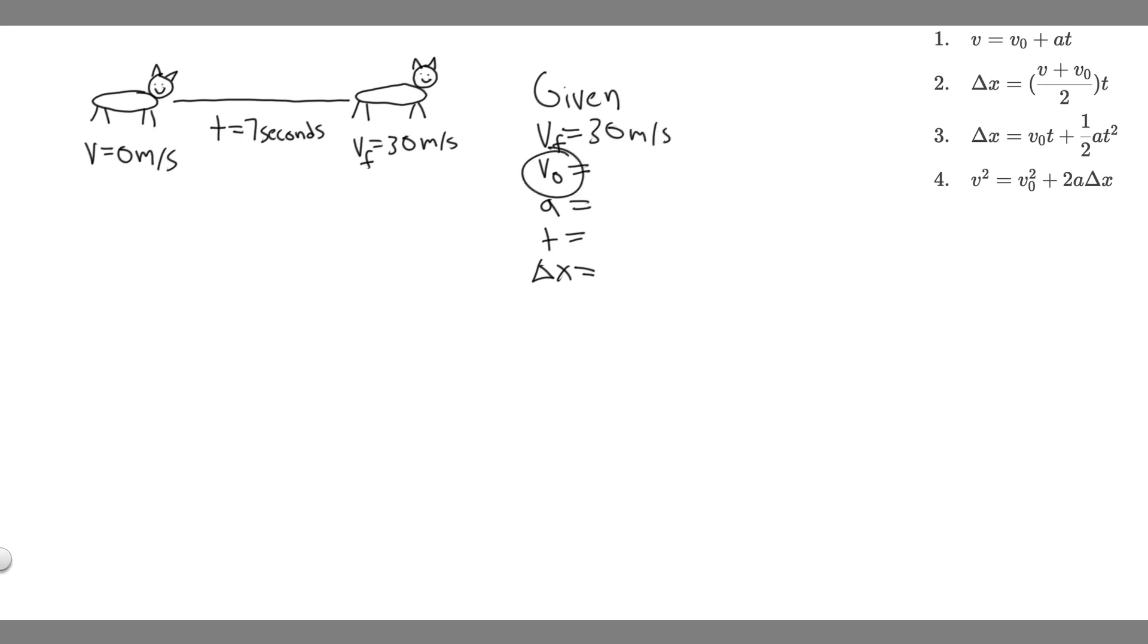And then v sub zero is the initial velocity or the speed in the beginning of the interval. We're told that it's going to be starting from rest, so we know the initial velocity, v sub zero, is 0 meters per second.